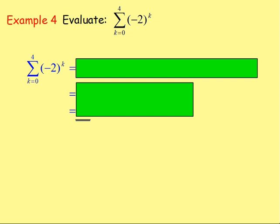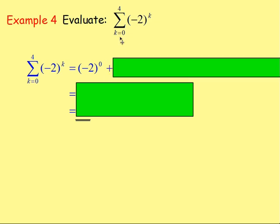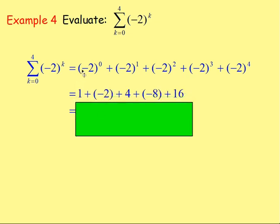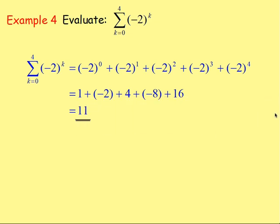Example four: evaluate the sum of (−2)^k going from k equals zero up to four. We start with k as zero: negative two to the power of zero. Then add negative two to the power of one, then negative two squared, then negative two cubed, then negative two to the power of four, and we stop. Anything to the power of zero is one; negative two to the power of one is negative two; negative two squared is four; negative two cubed is negative eight; and negative two to the power of four is sixteen. Working that out gives an answer of eleven.